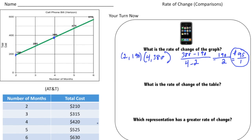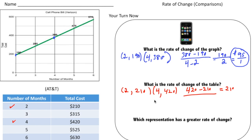Now let's do the same thing for the AT&T table. For two months it costs $210 and for four months it costs $420. So 420 minus 210 gives us 210, over the change in X of 4 minus 2 which is 2. The unit rate is 210 divided by 2, which is 105.